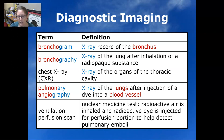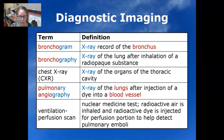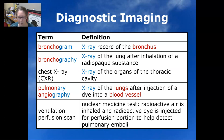Pulmonary angiography is an x-ray of the lungs after injection of a dye into a blood vessel. A ventilation-perfusion scan is a nuclear medicine test where radioactive air is inhaled and radioactive dye is injected for the perfusion portion, to help detect pulmonary emboli. Perfusion has to do with blood flow and ventilation has to do with airflow — checking where air is going in the lungs and where blood is picking up oxygen in the capillaries of the alveoli.